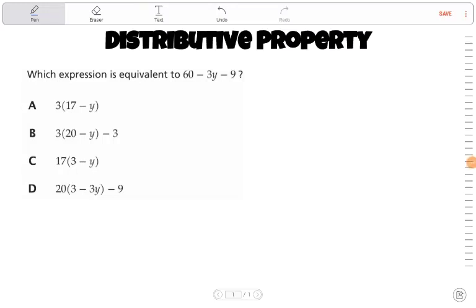Hey guys, here we're going to go over the distributive property. So the question says, which expression is equivalent to 60 minus 3y minus 9?